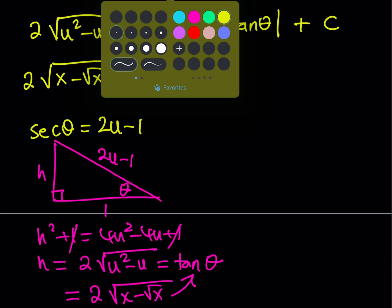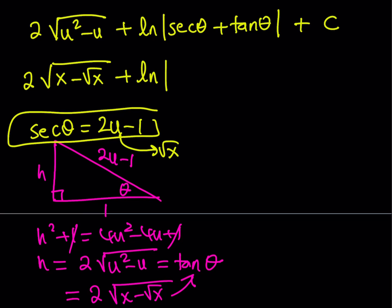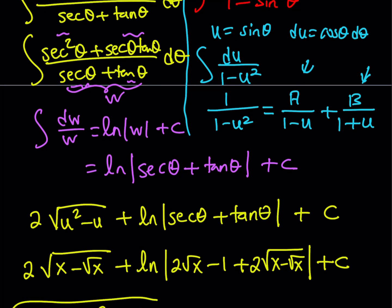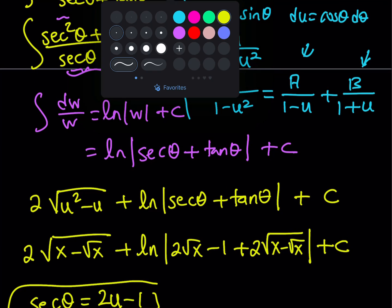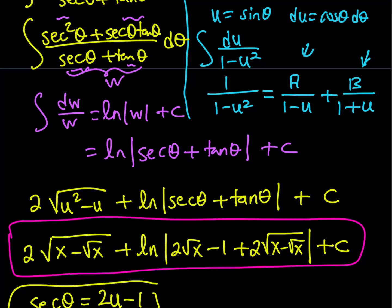Putting it all together: the second part is ln of (secant theta plus tangent theta), where secant theta equals 2 times the square root of x minus 1 and tangent theta equals 2 times the square root of (x minus square root of x). So the full answer is 2 times the square root of (x minus square root of x) plus ln of (2 times the square root of x minus 1 plus 2 times the square root of (x minus square root of x)) plus C. This brings us to the end of the video — I hope you enjoyed it, thank you for watching, I'll see you tomorrow with another video — until then be safe, take care.